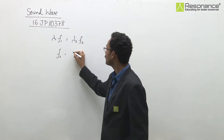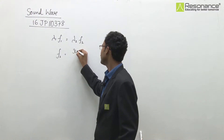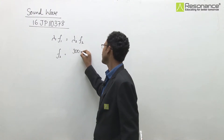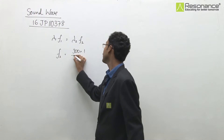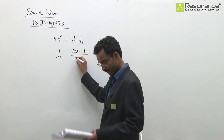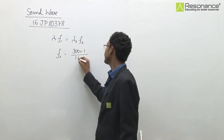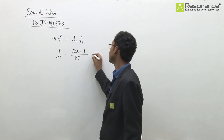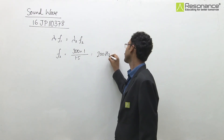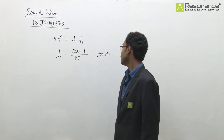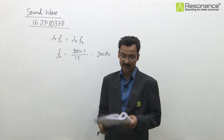The frequency of the child's voice f2 equals 300 multiplied by 1 meter, divided by 1.5 meters, which gives 200 hertz. Hence, the frequency of the child's voice will be 200 hertz.